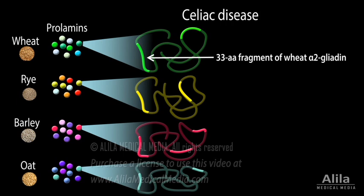While it also contains gluten, oat is safe for most people with celiac disease. This is because the prolimin content in oat is significantly lower than that in the other three grains, and the number of people reacting to oat epitopes is relatively smaller.